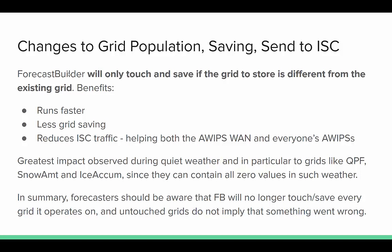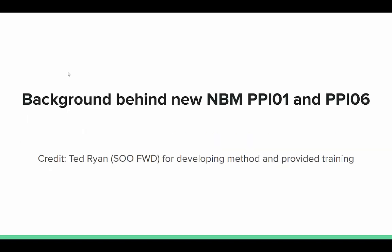In summary, don't worry if you don't see a grid update when you go to populate, or when you go through the precipitation type and create a snow/ice step and it doesn't update. We're just trying to manage the grid saving, and overall it helps make things run a little faster as well.